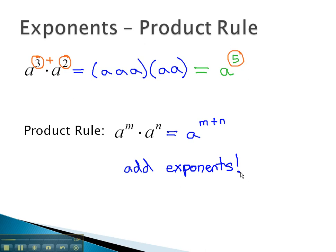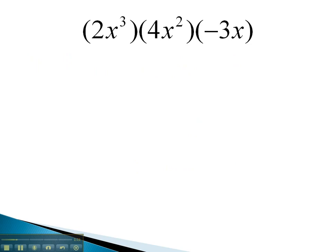Let's look at some examples where we can see this property work out. In this problem, we see several monomials multiplied together.